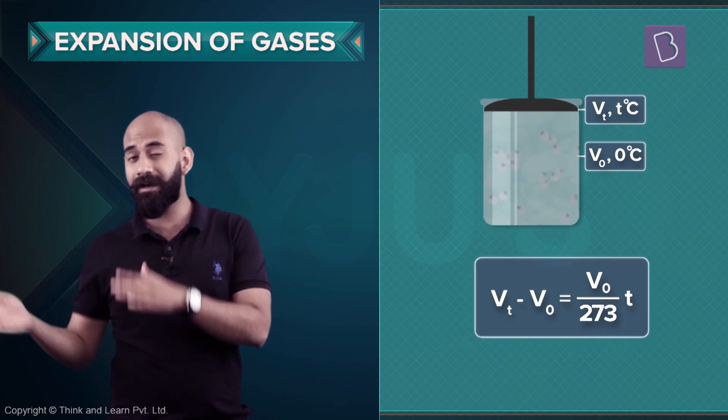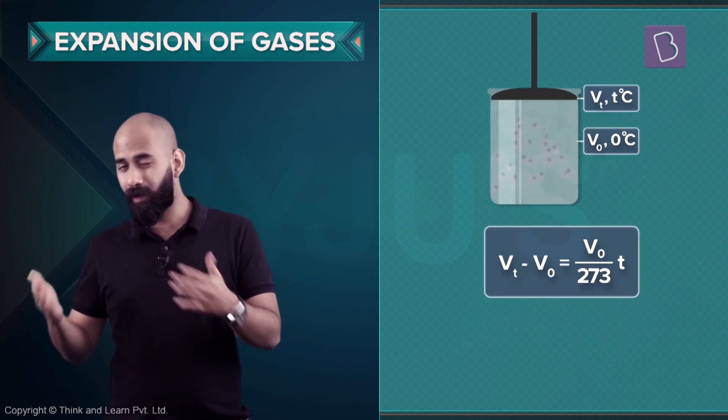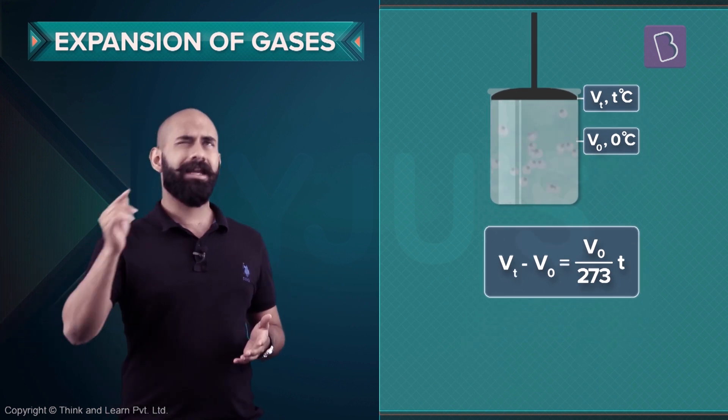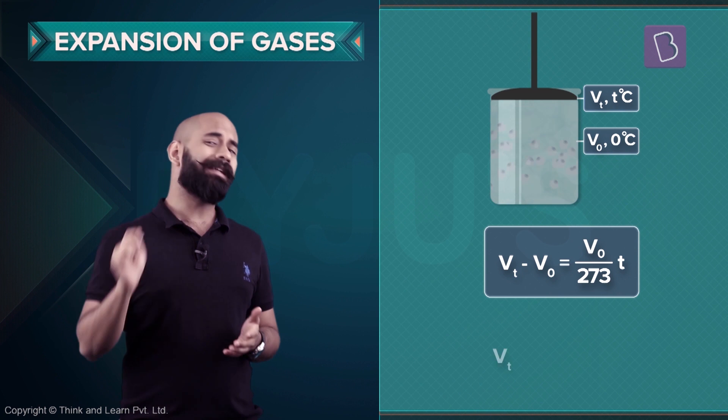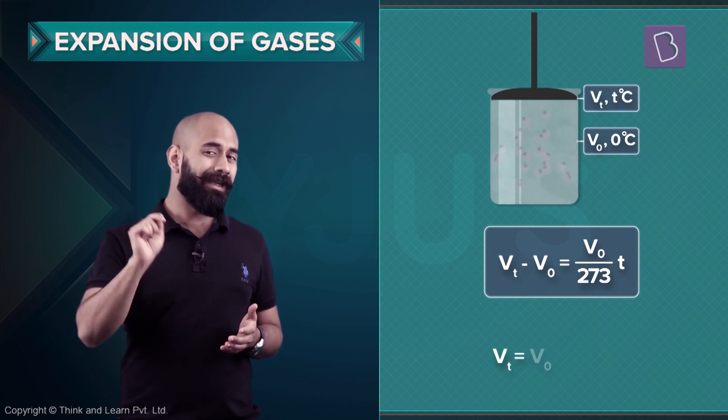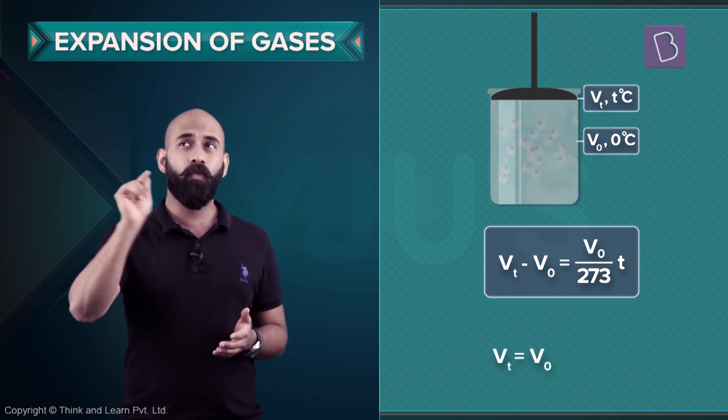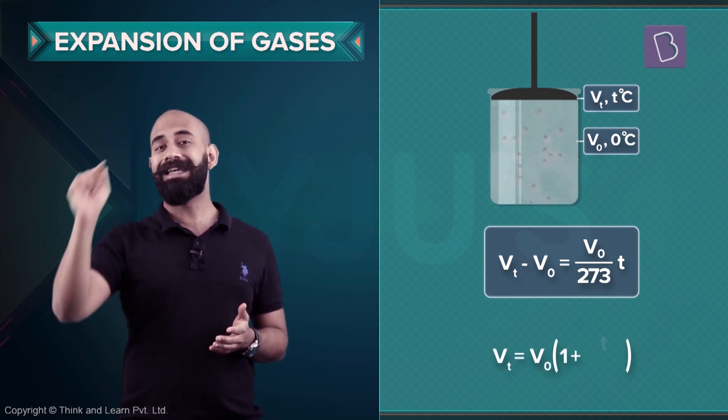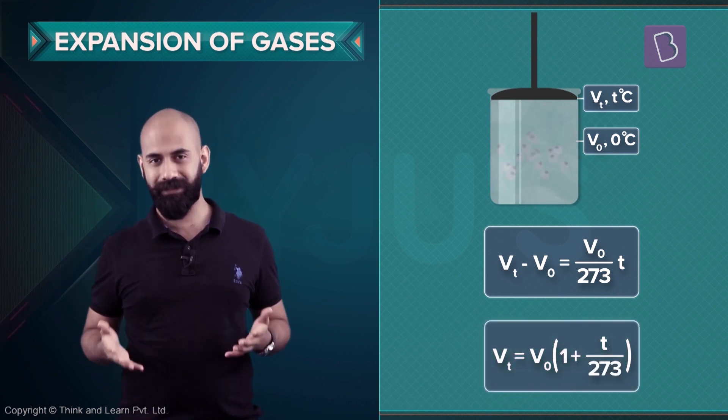Now if I rearrange this, what will I get? I'll get VT is equal to V₀ into (1 + T/273). This is just the simplified version of Charles' Law.